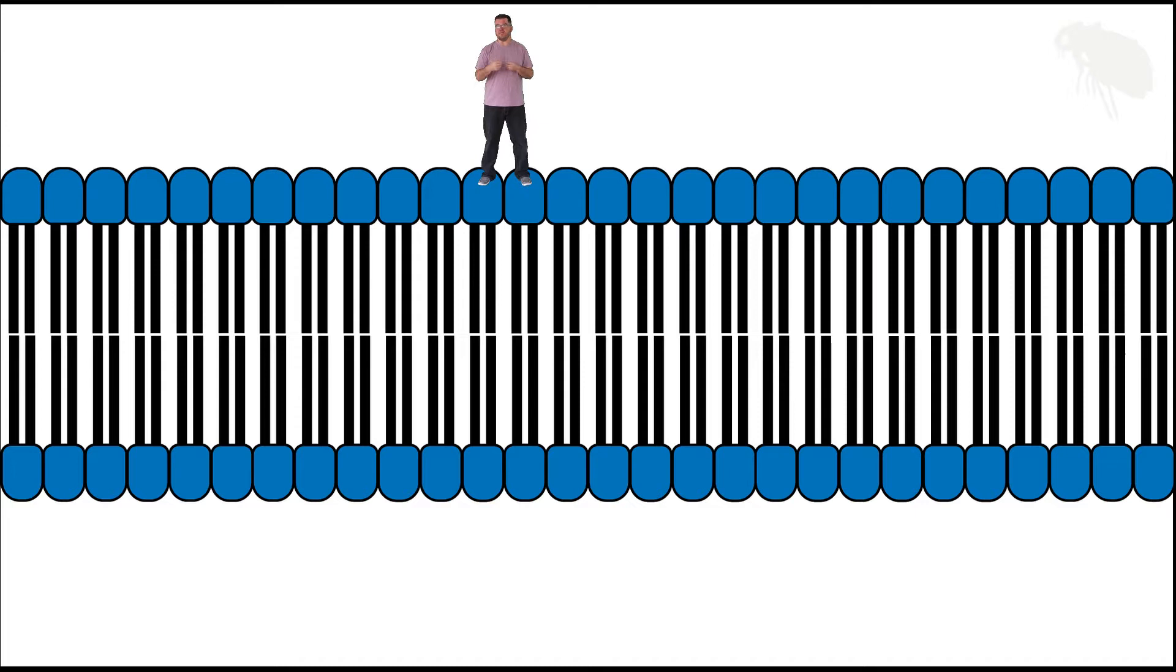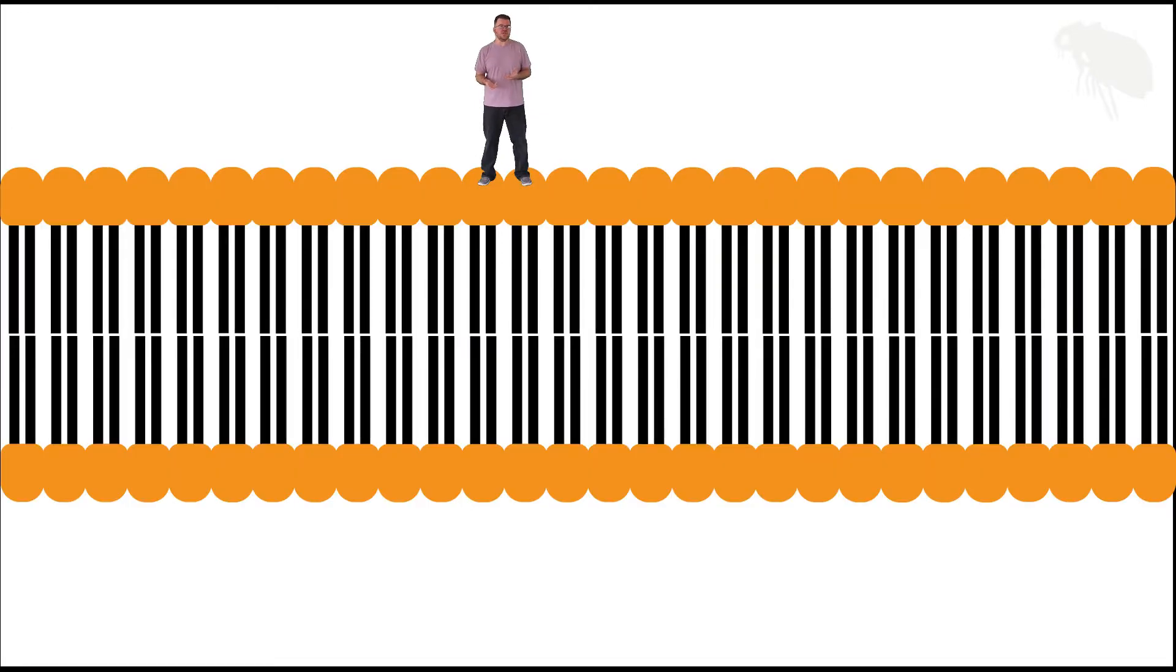What's important about them being composed mostly of phospholipids is the fact that they effectively have two components. On the outer portions of the membrane we have two very thin hydrophilic layers formed by the hydrophilic heads of the phospholipids.